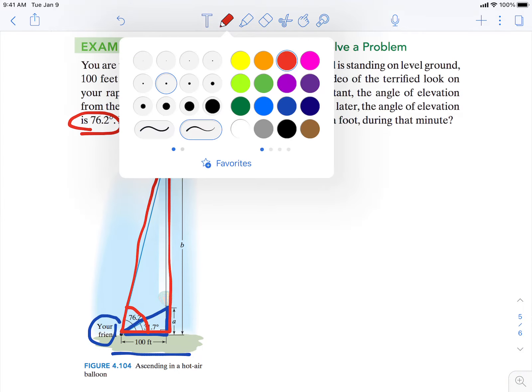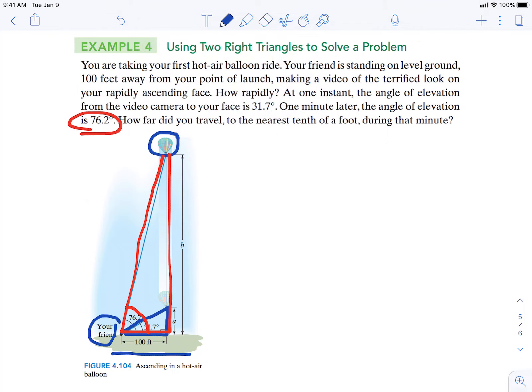So here's that first angle of elevation. For the second one, here's the first one. And both of them are 100 feet away.